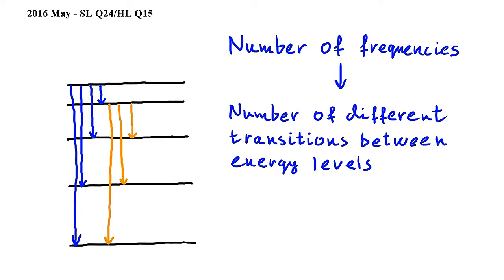From the third highest energy level we get two transitions and from the fourth highest energy level we get one transition, adding up to a total of ten possible transitions corresponding to ten frequencies. Therefore the answer to this question is C.